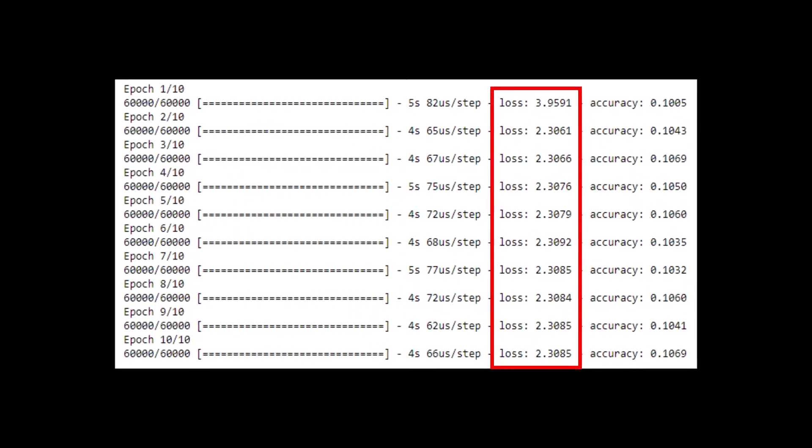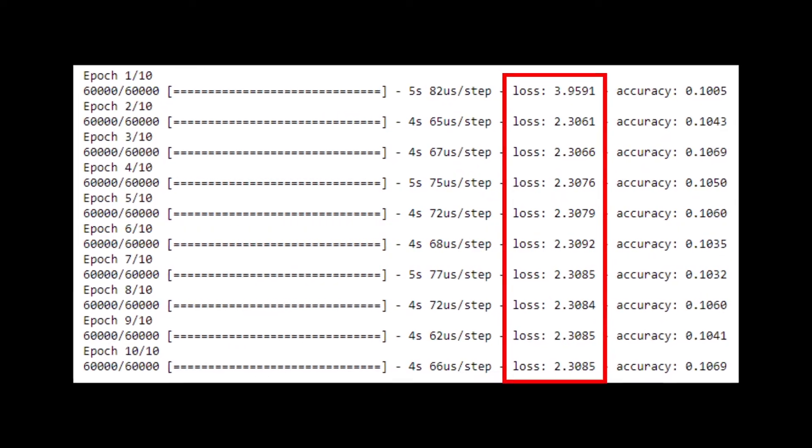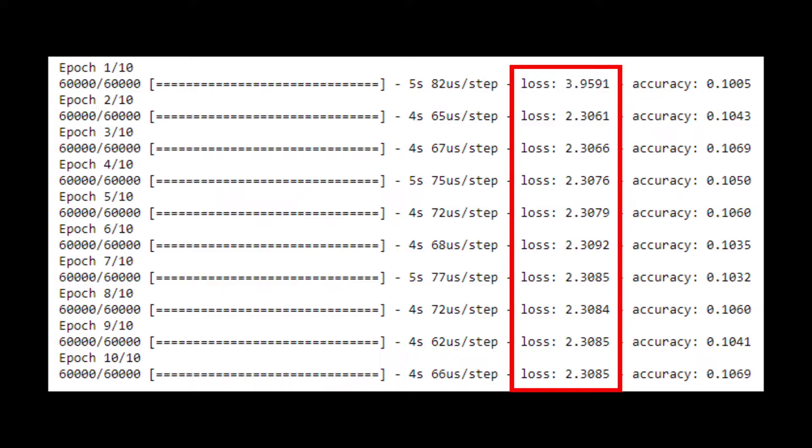If you train neural networks very often, then the chances are you may have encountered this problem at least once. If yes, then you have already experienced the vanishing gradient problem. Now let's see why and how this happens.